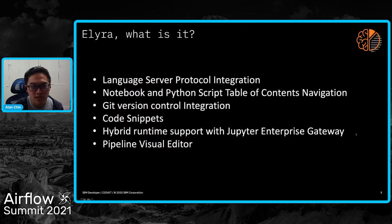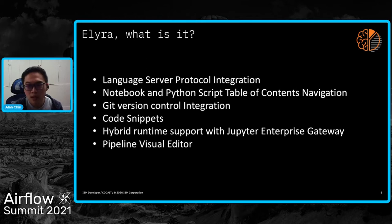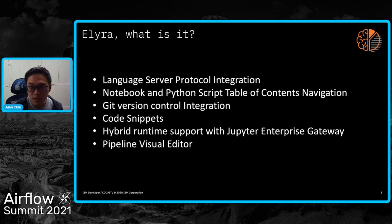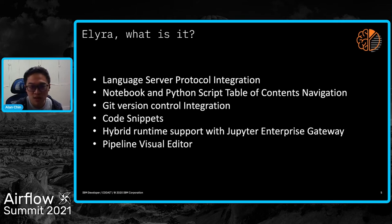Here are a couple of the features and extensions we have as part of Elyra. The language server protocol integration gives folks more of an IDE feel when using JupyterLab — syntax highlighting, autocomplete, et cetera. We have a notebook and Python script table of contents extension, built-in Git version control, code snippets, hybrid runtime support with Jupyter Enterprise Gateway so folks can launch remote kernels, and of course our centerpiece, the visual pipeline editor.